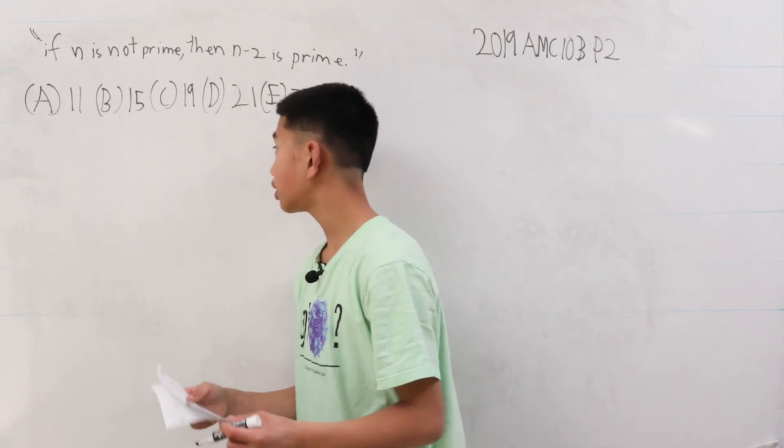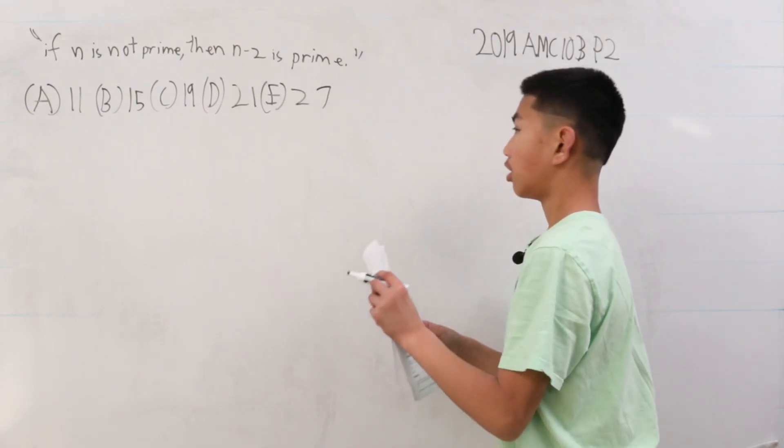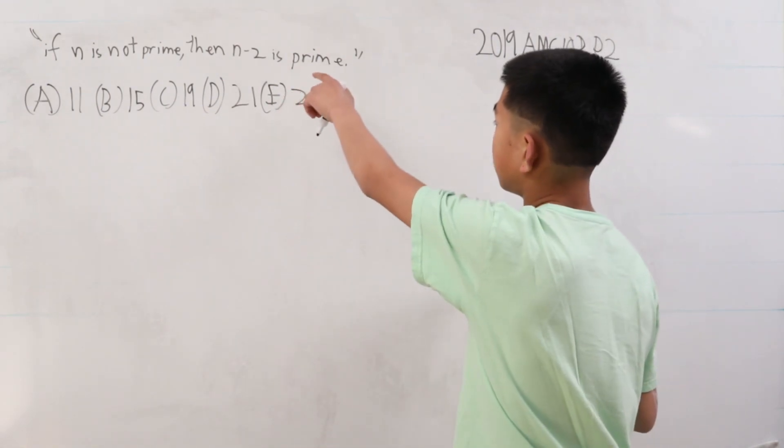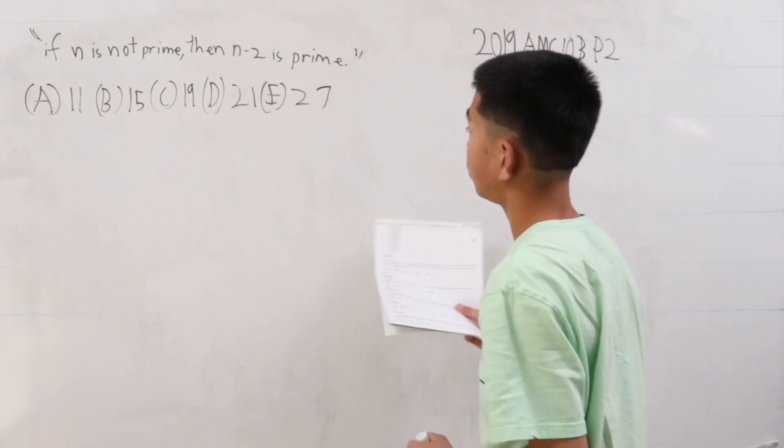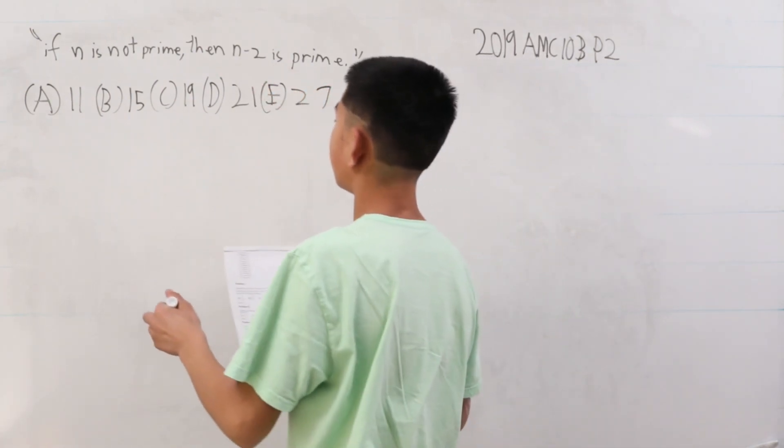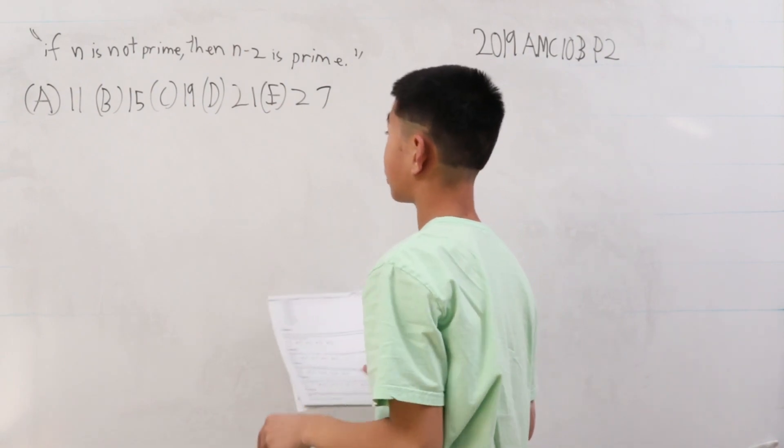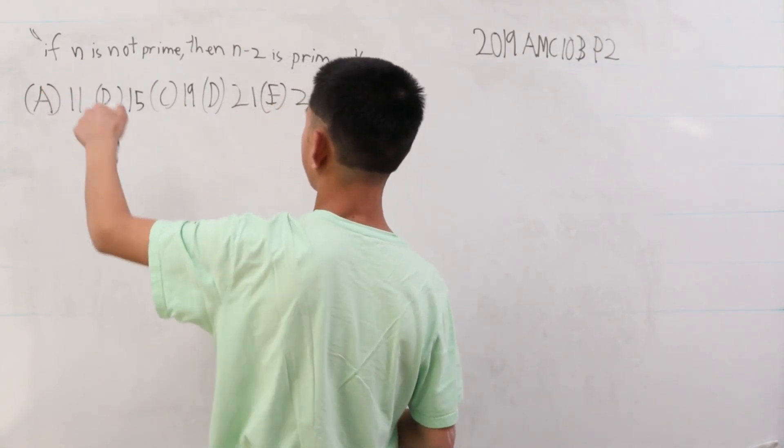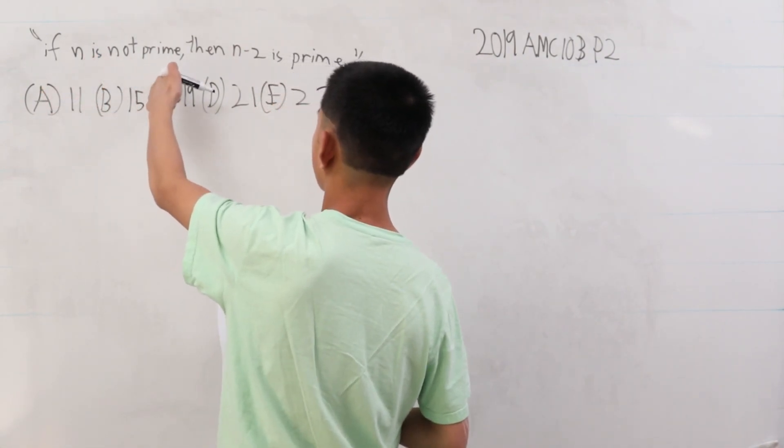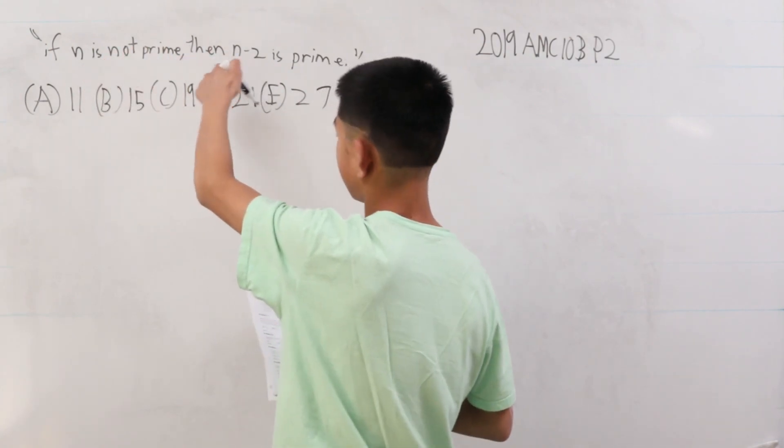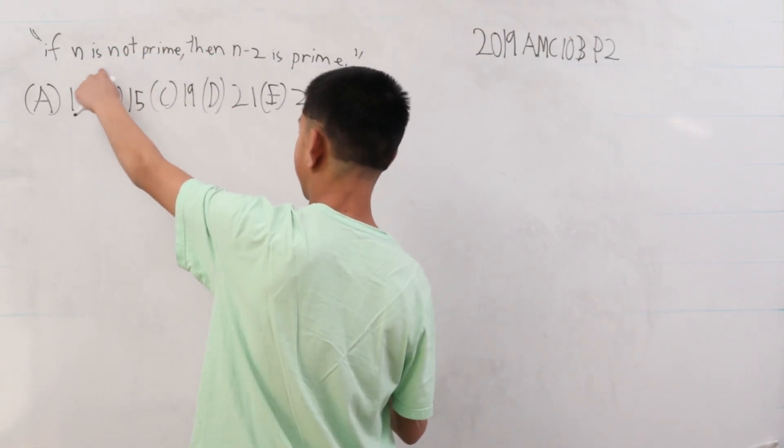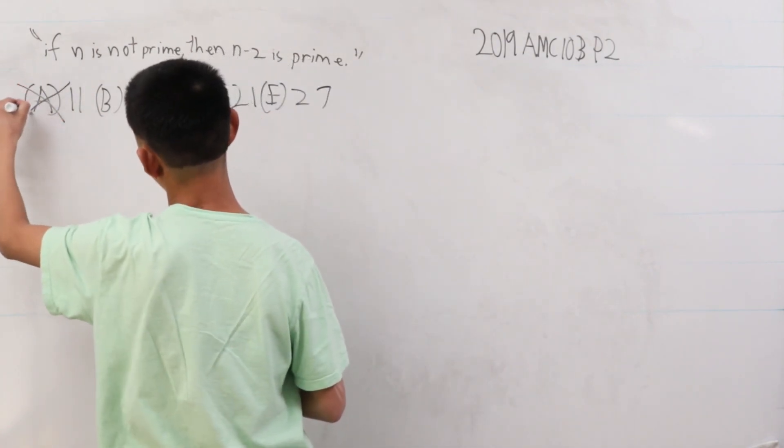So basically we want a value of n that does not satisfy this statement. Let's just look at the choices they give us. Now, the first section of this sentence is if n is not prime. This is prime, so it's not A.